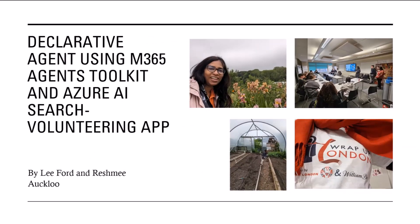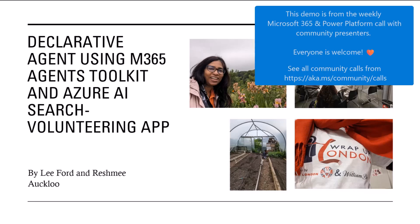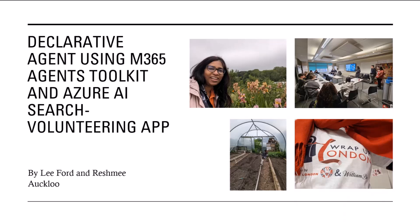We are demonstrating a volunteering app using the Emphasize Agents Toolkit. Behind the scenes, we are using Azure AI Search for grounding, as well as Microsoft Graph to interact with the SharePoint list. The idea behind it — I've been quite lucky to work for organizations that give employees time for volunteering activities. Here are some pictures of volunteering I've done, from gardening up to running a workshop at a local school.